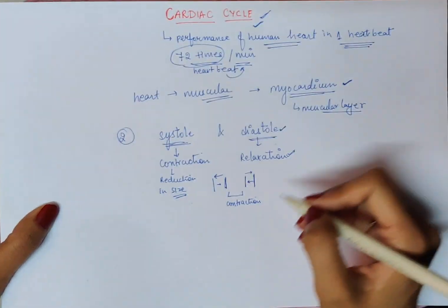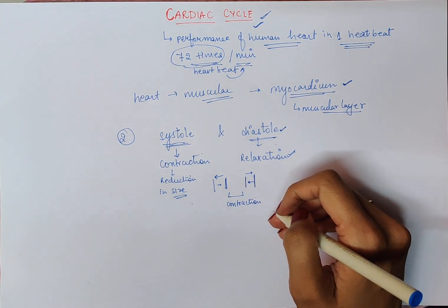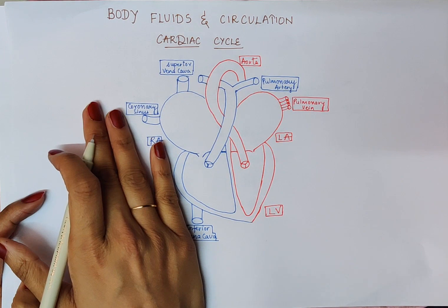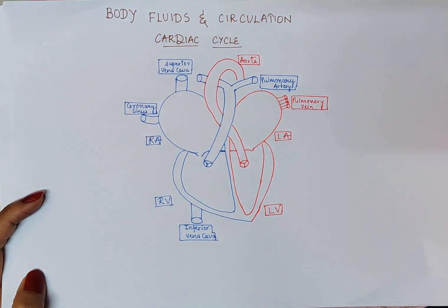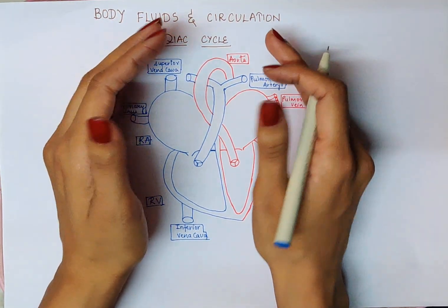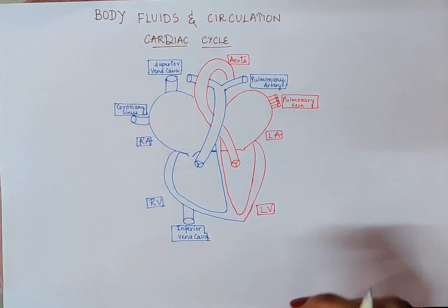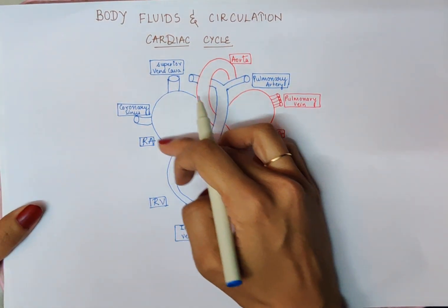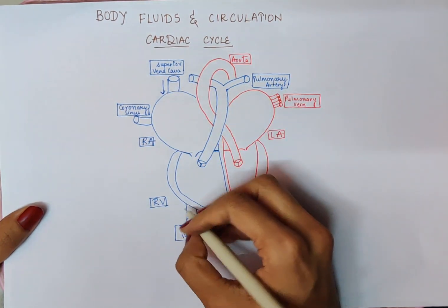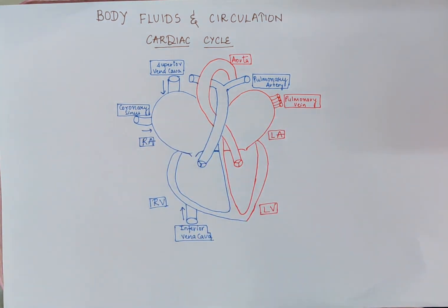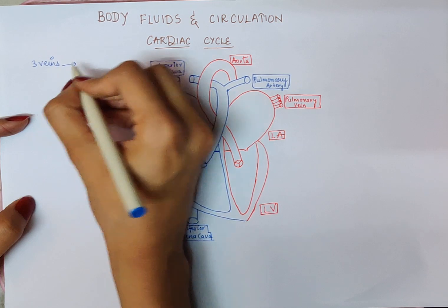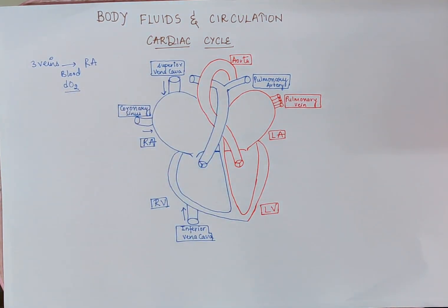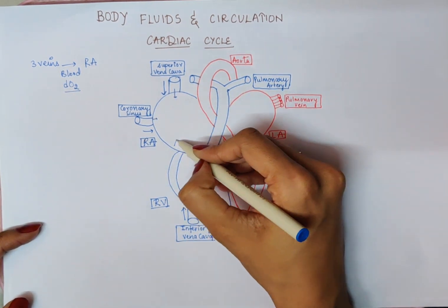Let's start with the main topic, the cardiac cycle. This is a human heart — the blue color shows the right side and the red color shows the left side. First, our heart is in a diastole, meaning relaxation condition, with no blood present. The superior vena cava, inferior vena cava, and coronary sinus — these three veins — will deliver deoxygenated blood to the right atrium.